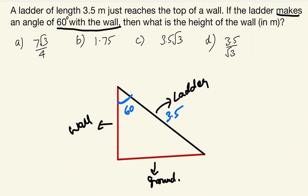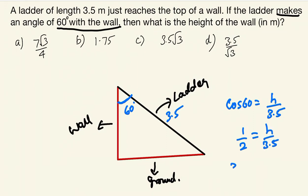If you read the question carefully, you will get 1 to 2 marks easily. The correct approach: cos 60 equals height of the wall over hypotenuse, which is adjacent by hypotenuse. So cos 60 equals 1 by 2, giving H by 3.5 equals 1 by 2. Therefore, H equals 3.5 by 2, which is 1.75. The second option is the correct answer.